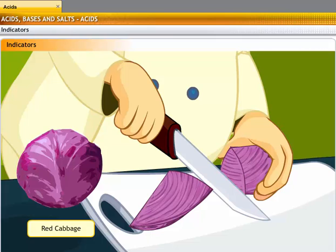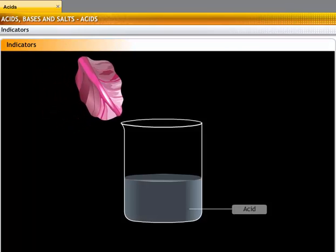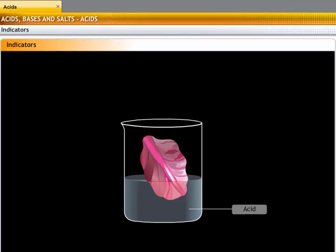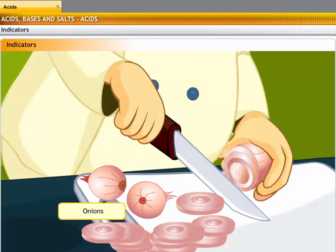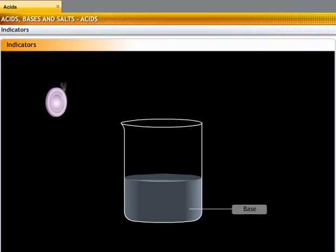An acid-base indicator is one which exhibits different colors in acids and bases. Red cabbage is a visual indicator used to detect acids. The cabbage leaves are purplish in color but turn red in the presence of an acid. Onions are called olfactory indicators because of their characteristic smell. This smell is destroyed by the action of a base.